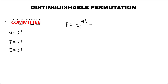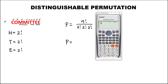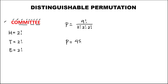So the formula is: 9 factorial divided by (2 factorial times 2 factorial times 2 factorial), which equals 45,360. So there are 45,360 ways to arrange all the letters in this word.